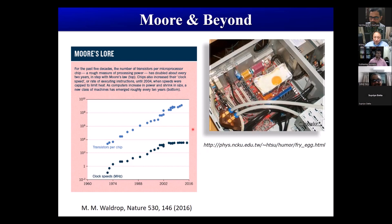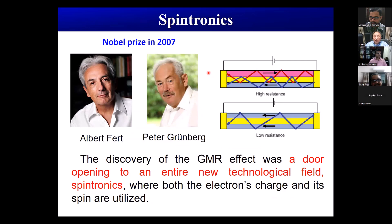One has to think about other solutions. In the semiconductor industry, we use the charge property of electrons to transfer information. However, electrons contain both charge and the spin degree of freedom. If we can use both properties, we might be able to create more functionalities, and particularly if we use the spin property, this can reduce power consumption significantly. This is spintronics. Spintronics started with the discovery of the giant magnetoresistance (GMR) effect in the late 1980s, which opened the door to this entire new technology field. The two gentlemen, Albert Fert and Peter Grünberg, discovered this GMR effect and won the Nobel Prize in 2007.